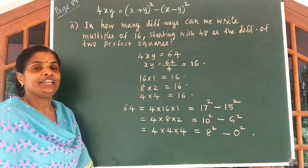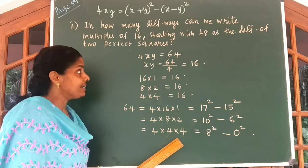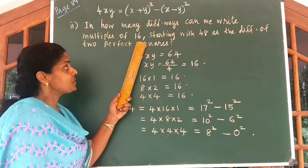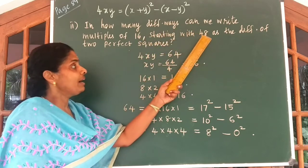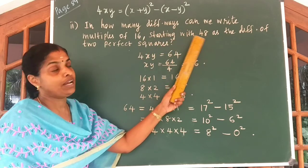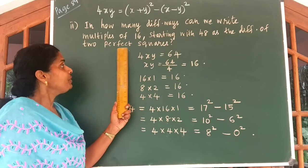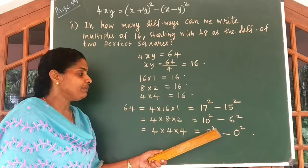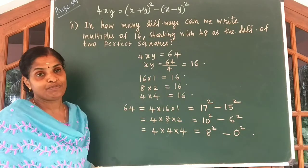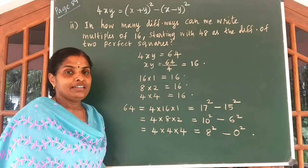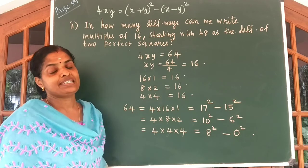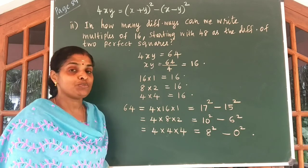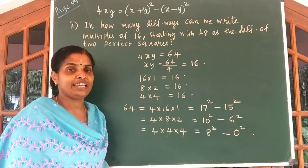So what did you understand, children? We can write the multiples of 16 starting with 48 as the difference of two perfect squares in three different ways. Hope the idea is clear to you. Our exercise is over. The next exercise we will start in the next class. Thank you.